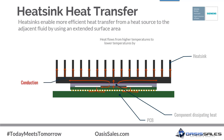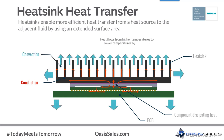Efficient heat transfer implies that heat is transferred at a smaller temperature difference. For a heat sink, heat moves from the source — the die in the component — and conducts through the component into the heat sink base and fins. From the surface of the heat sink, heat leaves through convection and radiation. Heat sinks are made of a high thermal conductivity material such as aluminum to maximize heat conduction and surface area for efficient convection and radiation.